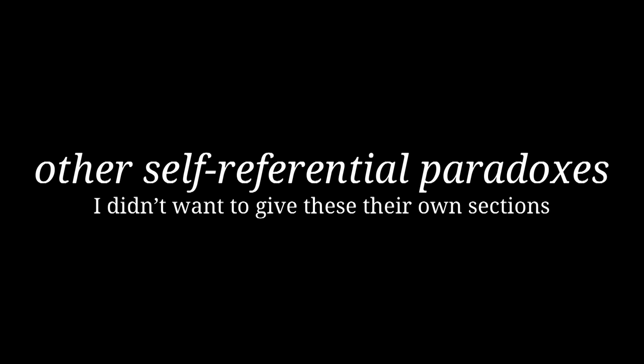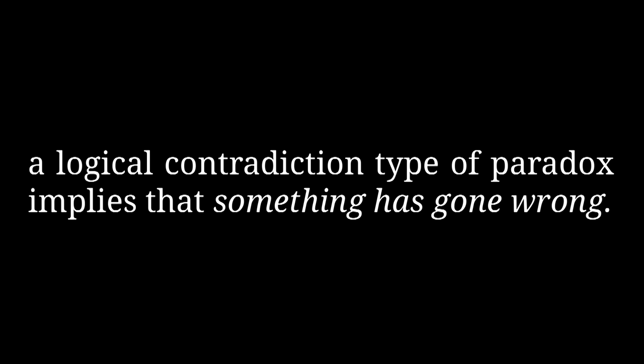These self-referential paradoxes show up all over the place, and they all boil down to the same idea. You have some setup that leads to a statement that's dependent on its own truth value, so that if it's true it's false, and if it's false it's true. In general, whenever a logical contradiction shows up, it means that some assumption you made must be wrong.